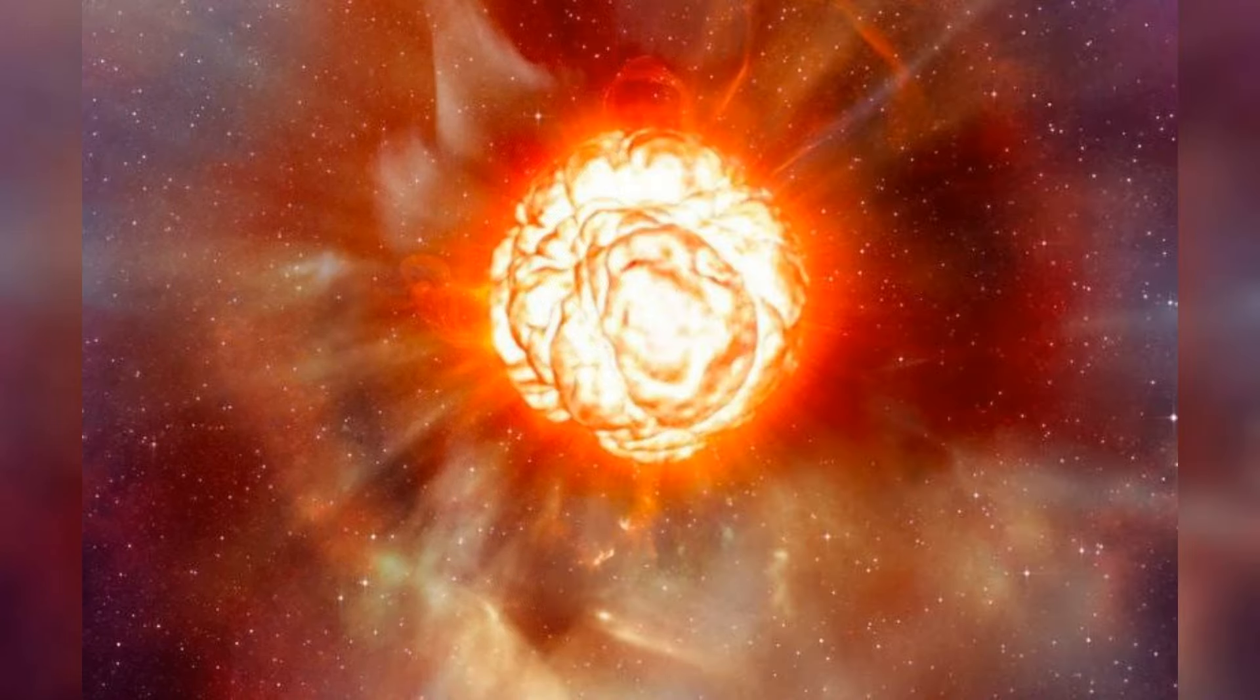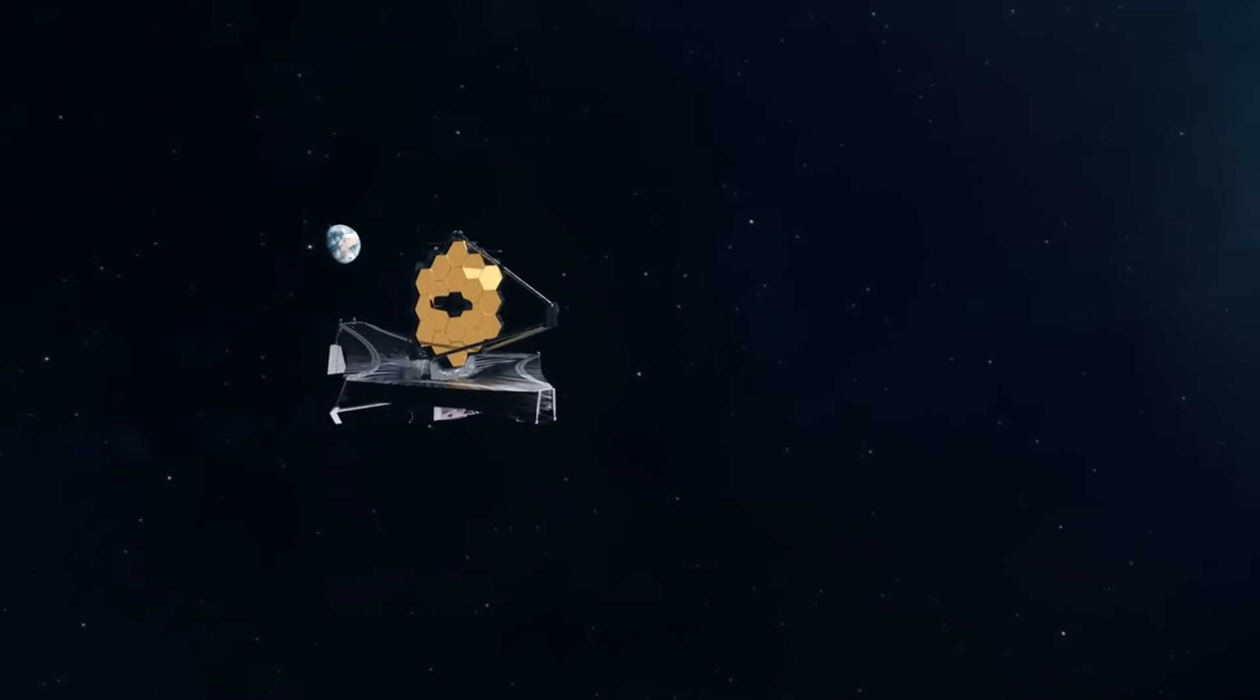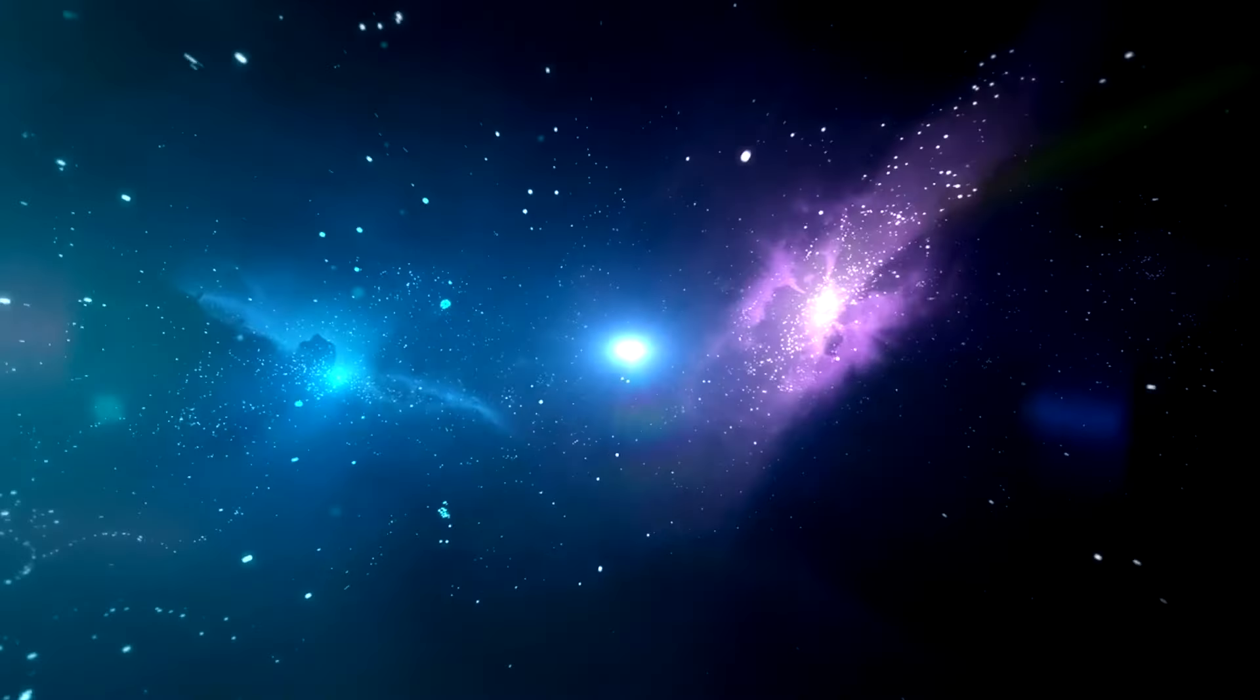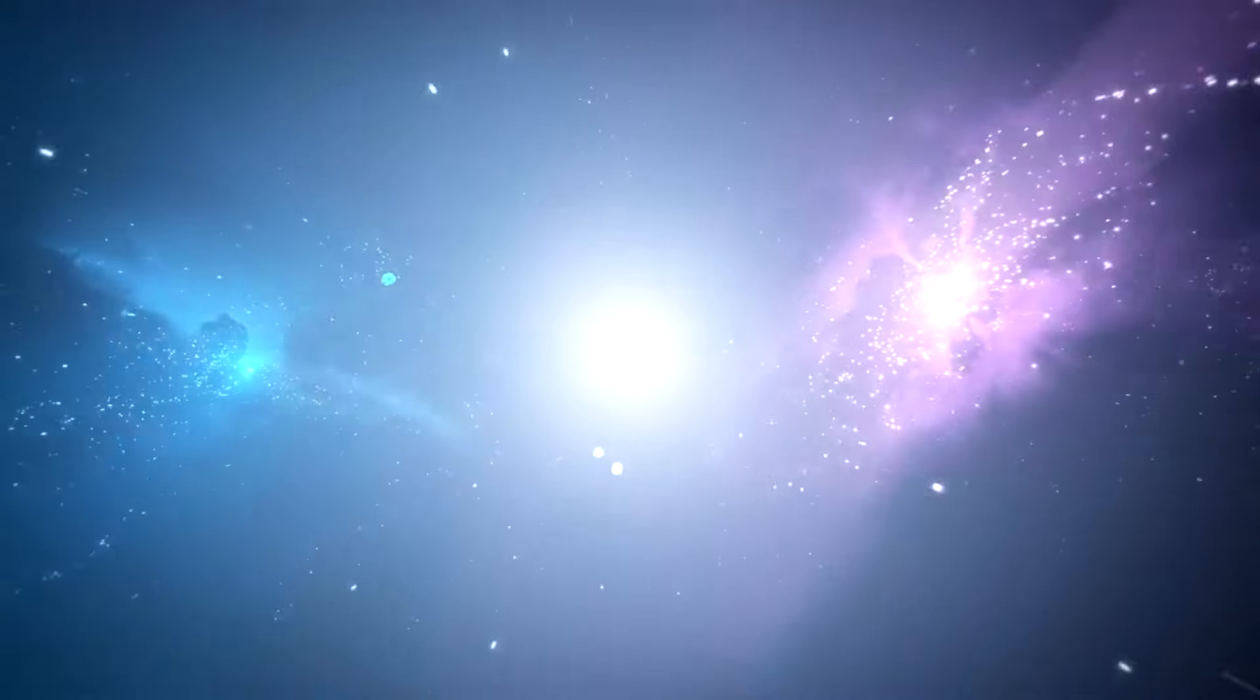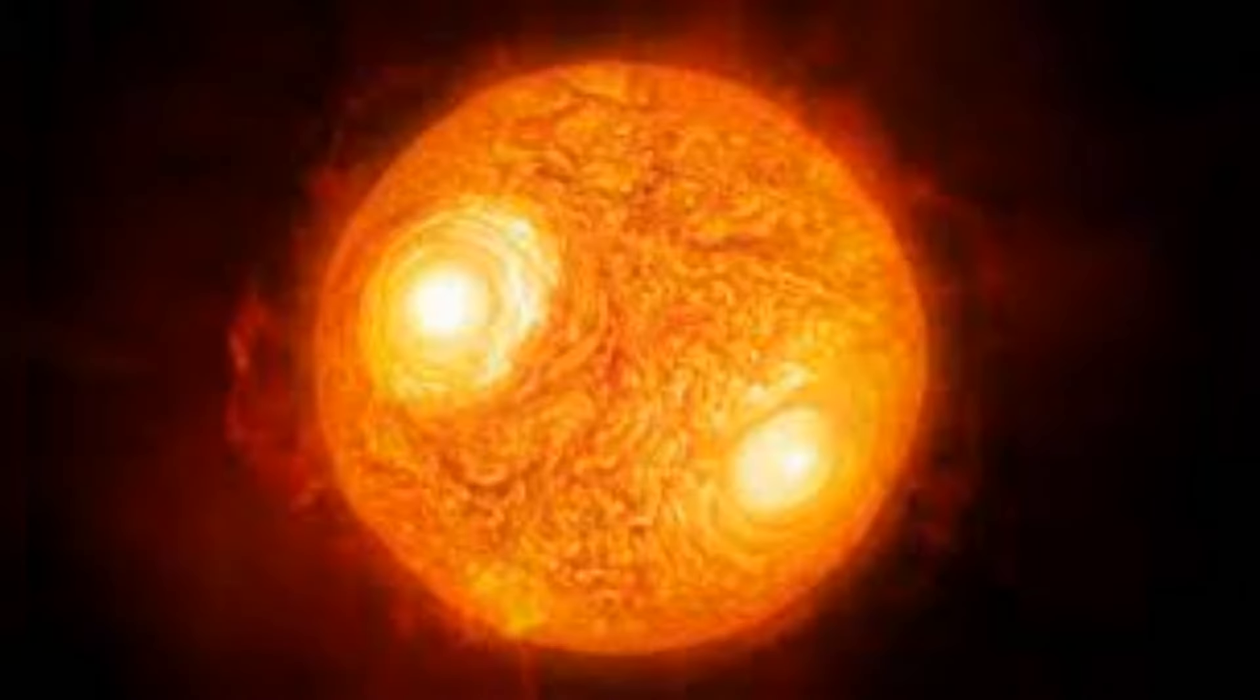Betelgeuse, a colossal red supergiant star in the Orion constellation, has been a subject of wonder and speculation for years. Recently, the James Webb Space Telescope has shed new light on what's really happening with this giant star. Could this be the key to understanding its impending supernova? Or will it present even more puzzles? Stick around as we dive deep into the latest revelations about Betelgeuse.